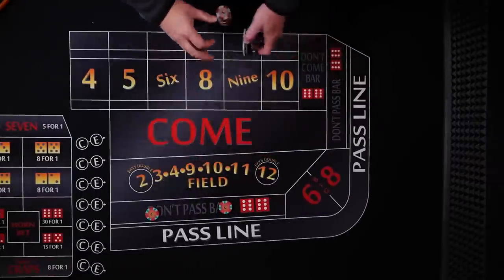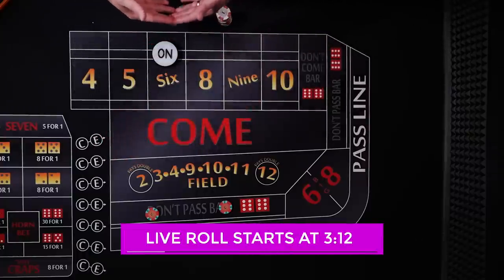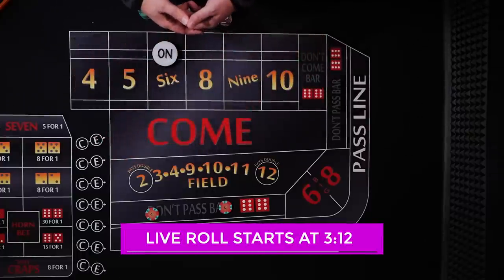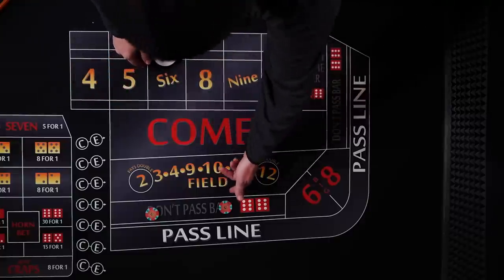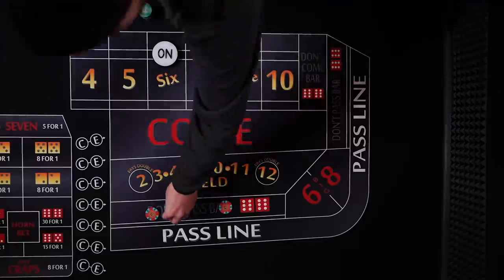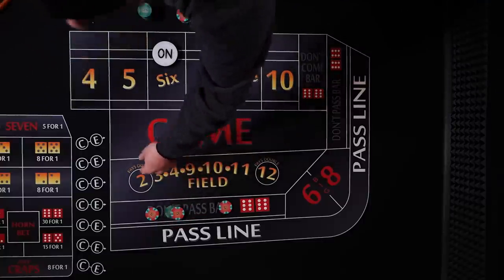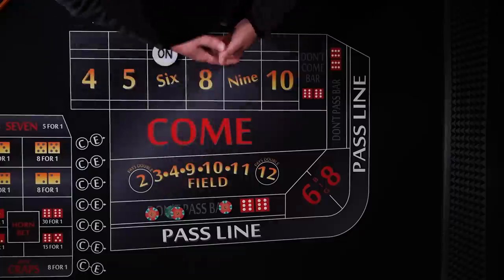If you're a don't player and there's a point established, at this point in the game the don't player has the advantage over the casino. Now a lot of players will argue, well I have the advantage so why would I put out more money? I will get paid 1 to 1 for a bet that I have the advantage on. So a lot of players don't like to lay additional odds behind their don't because they have to pay more or play more to win back less.